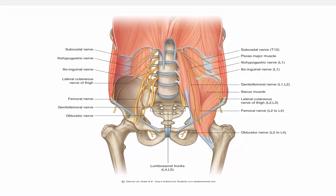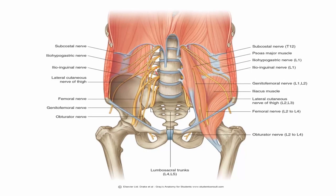This is the lumbar plexus after removal of the psoas major muscle. Branches coming out from the lumbar plexus are related to the psoas major muscle. The sub-costal nerve is not related to the lumbar plexus. Starting with the ilio-hypogastric nerve, then ilio-inguinal nerve, lateral cutaneous nerve of the thigh — lateral to the psoas major. Genito-femoral nerve is in front of the psoas major. Medial to the psoas major there is the obturator nerve, while the femoral nerve is lateral.